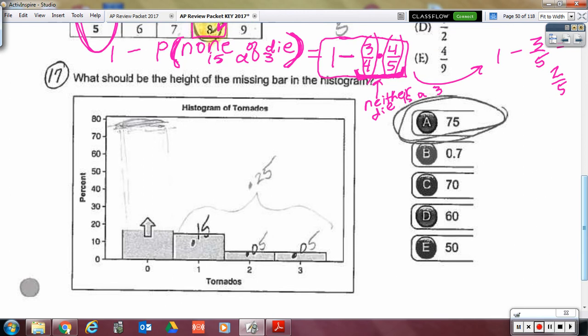All right. This one, that bar should go up to 75 because the other represent 25% of the data. Okay. Any questions on those so far?